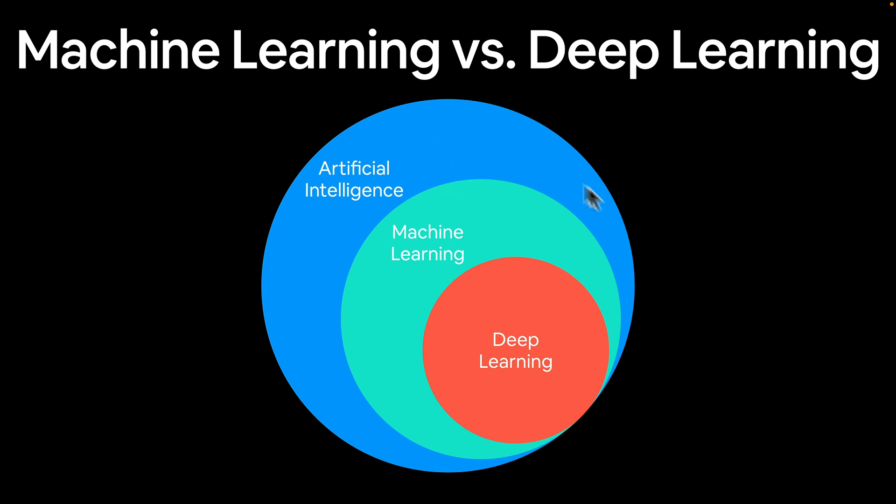You've got this overarching big bubble of the topic of artificial intelligence, which you could define as almost anything you want. Then typically there's a subset within artificial intelligence, which is known as machine learning, which is quite a broad topic. And then within machine learning, you have another topic called deep learning.